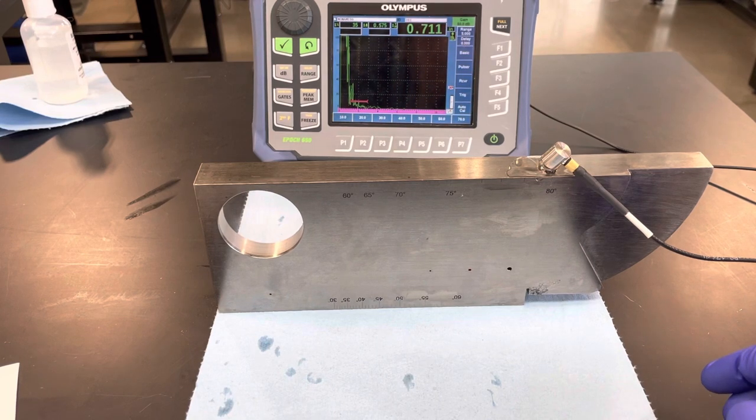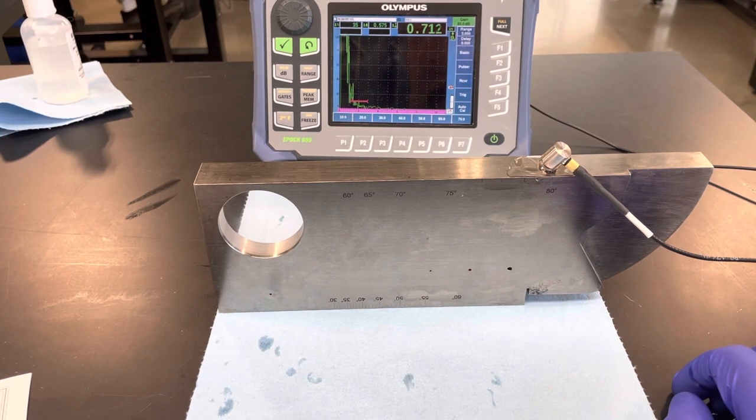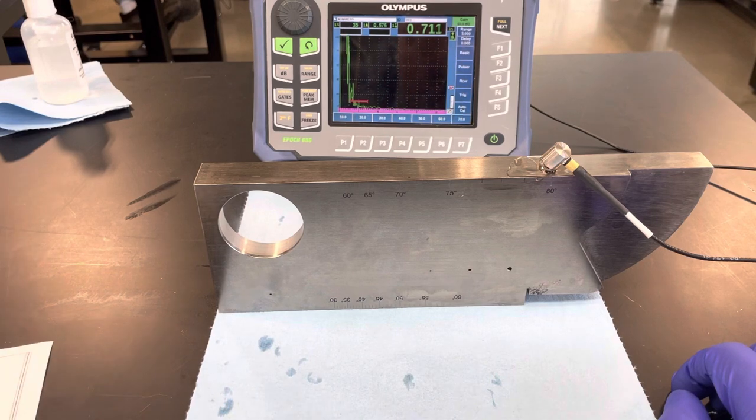We have a 2.25 MHz transducer using Epic 650, a type 2 steel IIW block, and our gain is at 60.